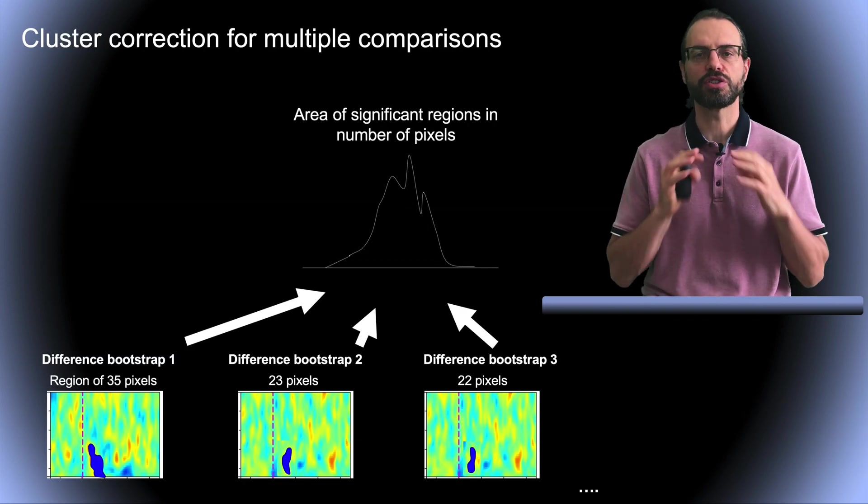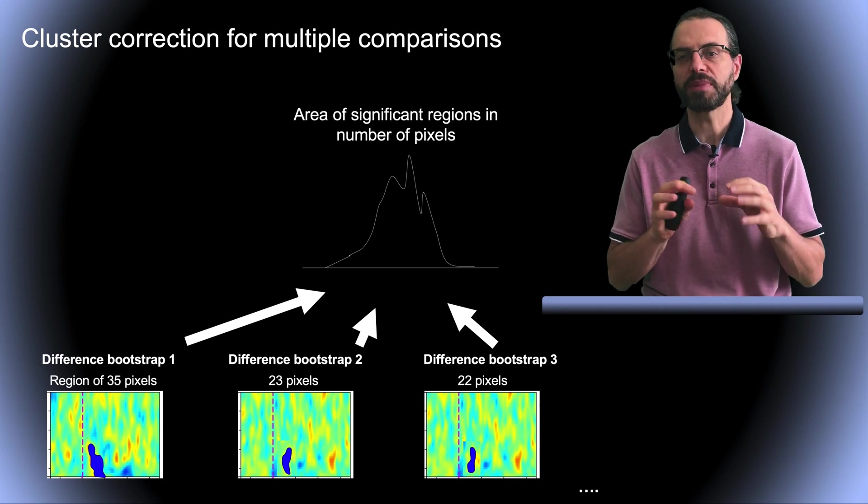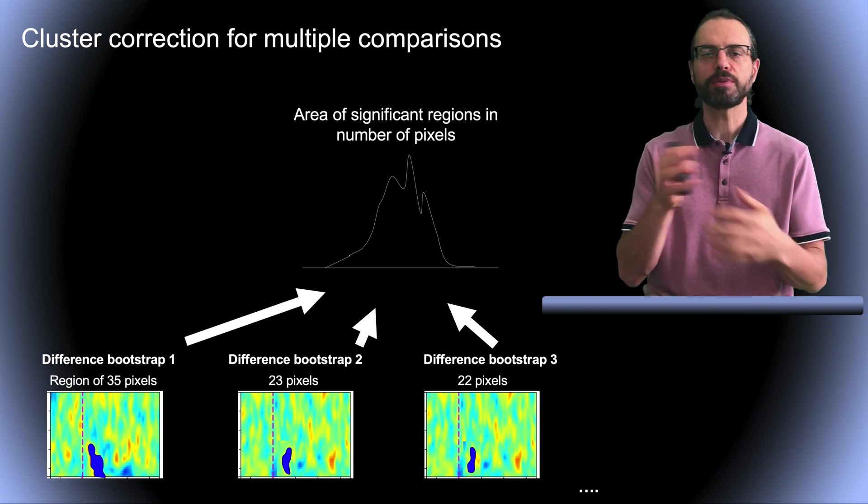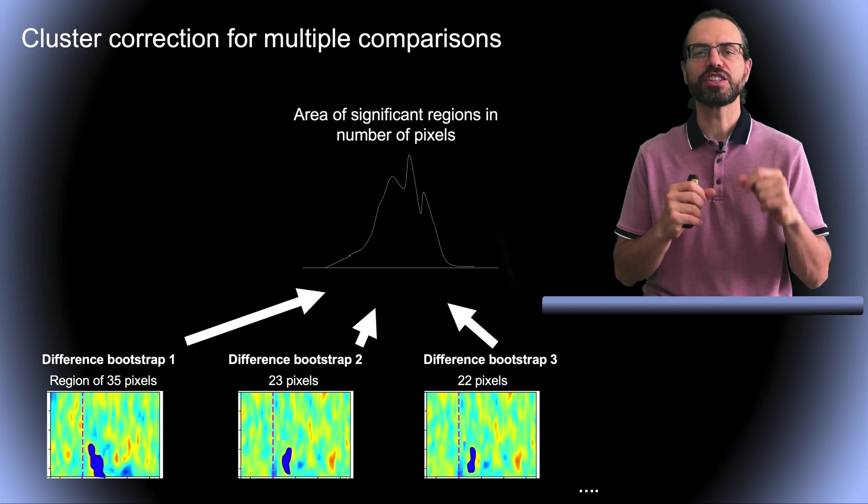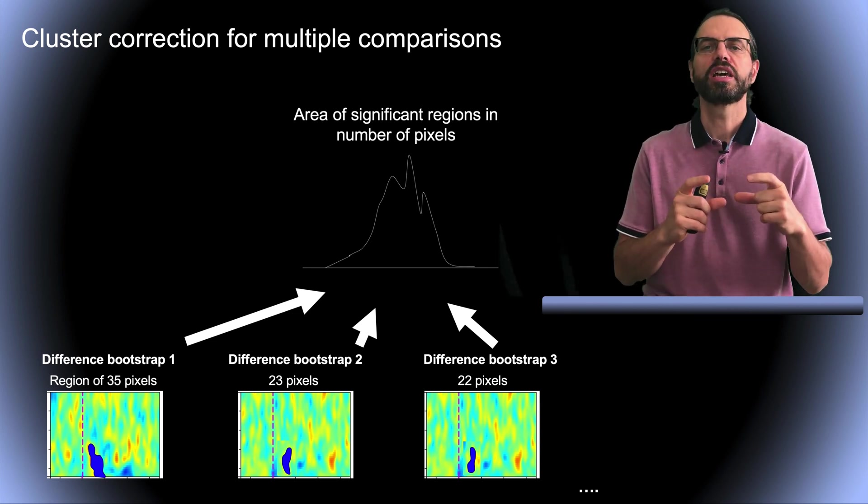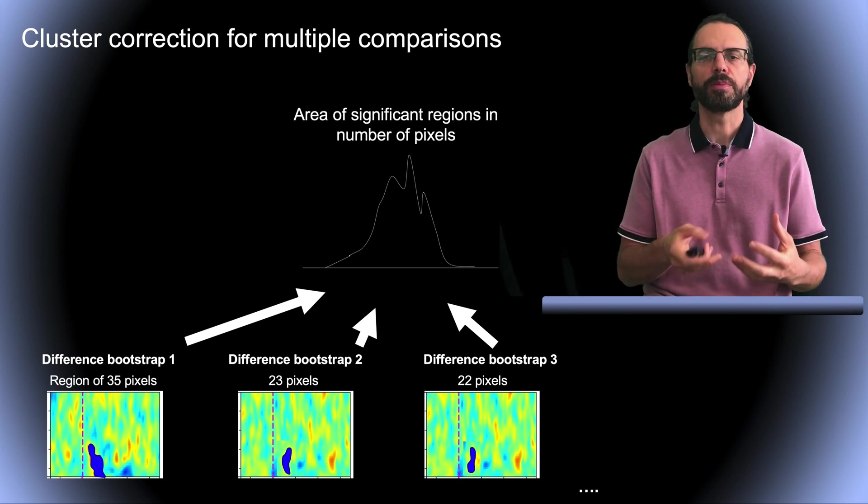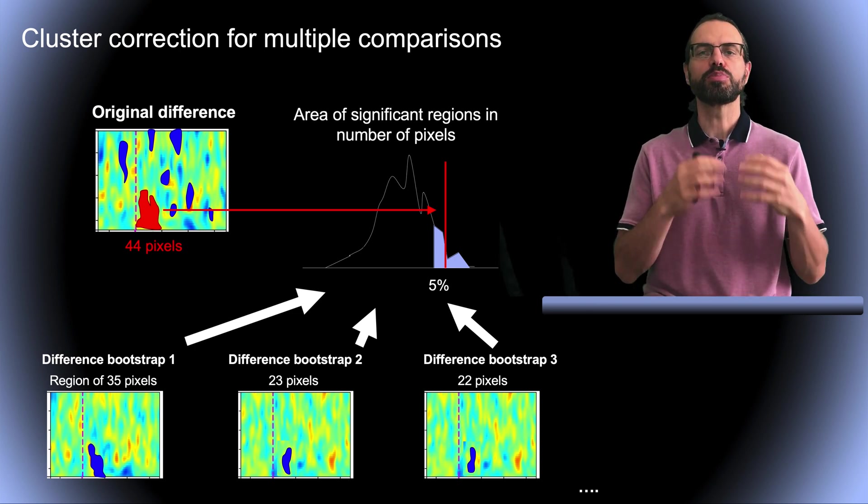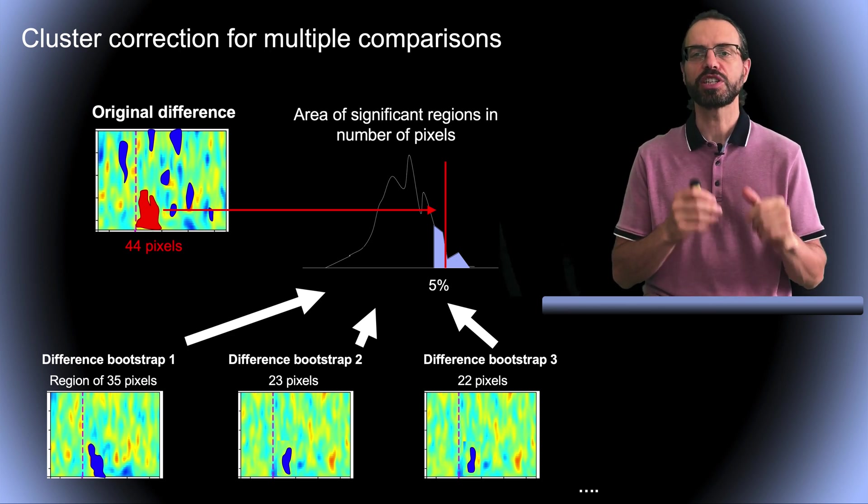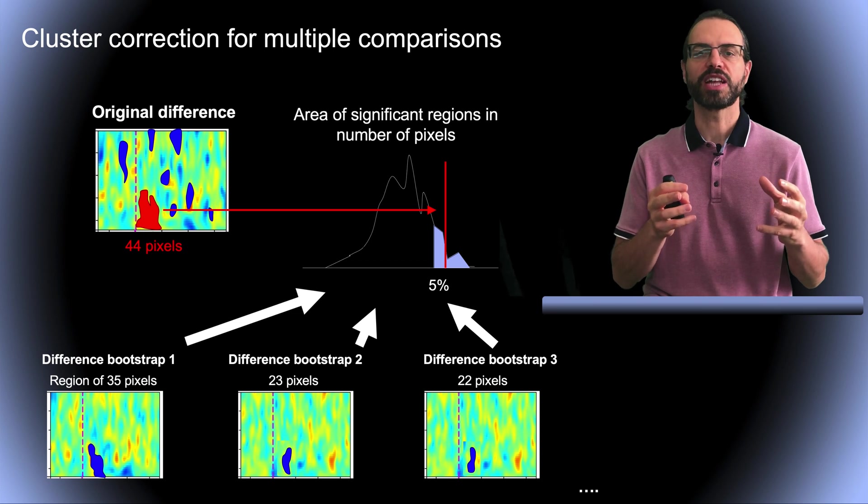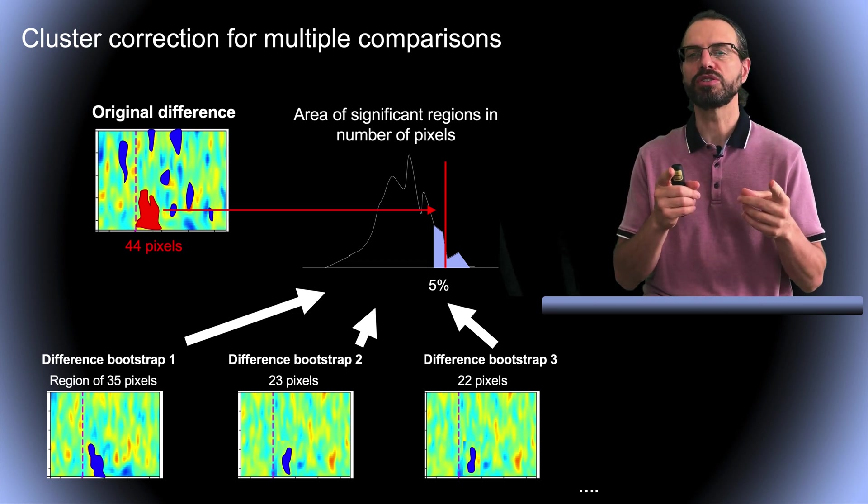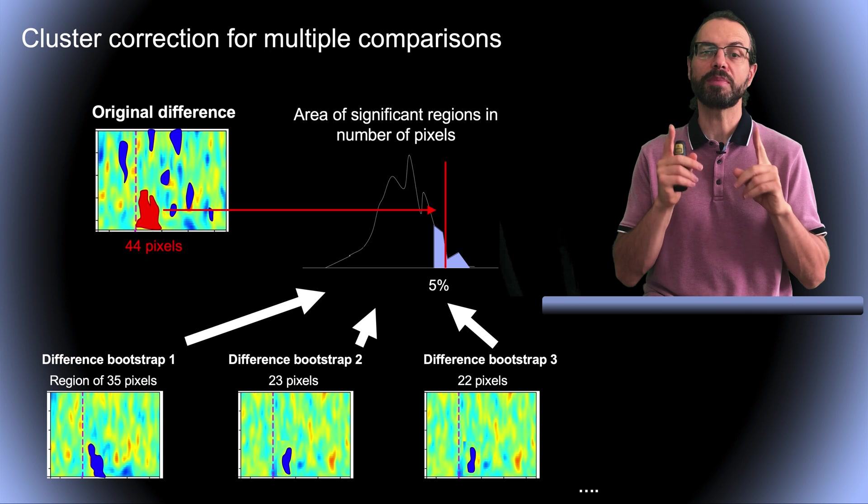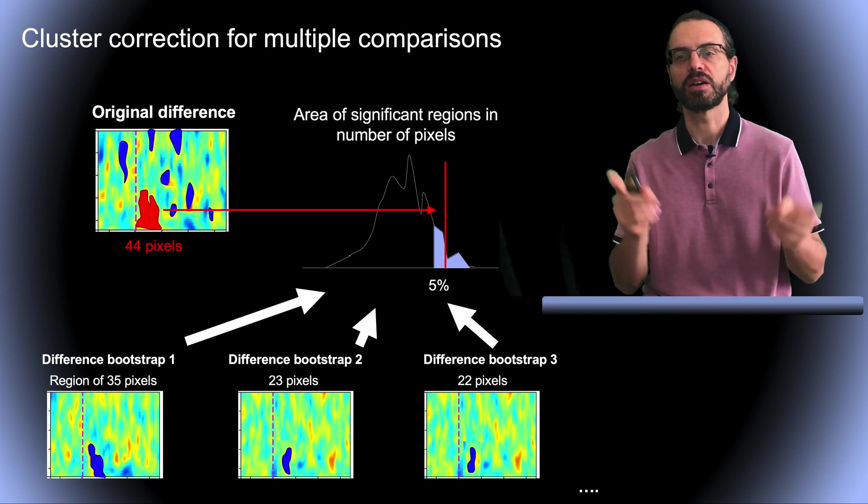The next method is the cluster method, which is the multiple-step max-t method. In this method, we use parametric statistics at a given p-value threshold, for example 0.05. We bootstrap the condition and we look at the significant regions. We count the number of contiguous pixels in each region, use the largest region and add it to our null distribution. To assess significance, we evaluate if a significant region's area lies in the bootstrap null distribution upper tail. So, in this case, this is only true for the red area. So it's that simple. Note that we are using the region size, but we could use other statistics, such as the sum of t-values in that region. Note that it's the same as the max-t method, except we computed different statistics across all pixels. In the previous slide, we take the maximum statistics across all pixels.